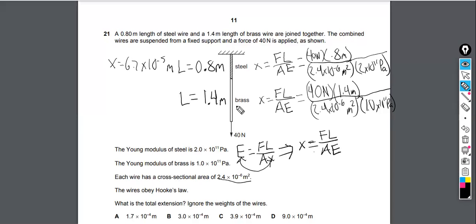How about the brass? 40 times 1.4 is 56 divided by open parentheses 2.4 times 10 to the negative 6 close parentheses equals divided by open parentheses 1 times 10 raised to the 11 close parentheses equals and I get the extension for the brass over there to be 2.3 repeating by 10 to the negative 4 meters. If I keep that in my calculator and add 6.6 repeating times 10 to the negative 5 I get 2.9999 which is basically 3 by 10 to the negative 4 meters which is choice B.